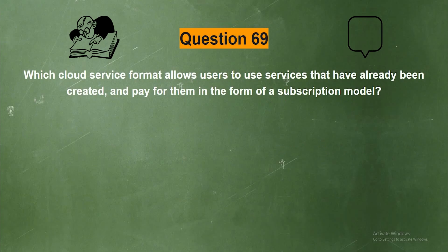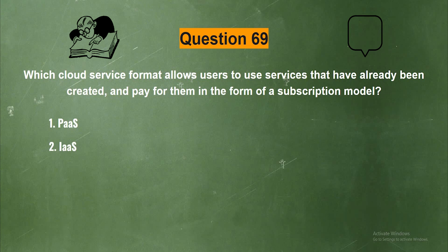Question 69. Which cloud service format allows users to use services that have already been created and pay for them in the form of a subscription model? The options are: Option 1, PaaS; Option 2, IaaS; Option 3, SaaS; Option 4, DaaS.